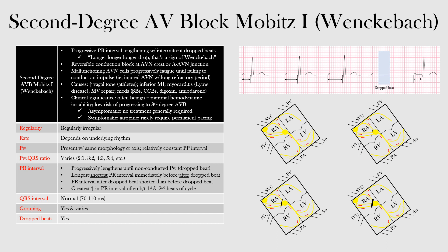The anatomic location affected in Mobitz type 1 is higher in the conduction system, at the crest of the AV node or the junction between the atrium and the AV node. With Mobitz type 2, the block occurs lower in the conduction system. Looking at the diagram, we have our sinus node, the AV node, then the His bundle, right bundle branch, left bundle branch, left anterior fascicle, and left posterior fascicle — that is our normal conduction system. The issue in AV blocks is near the AV node.